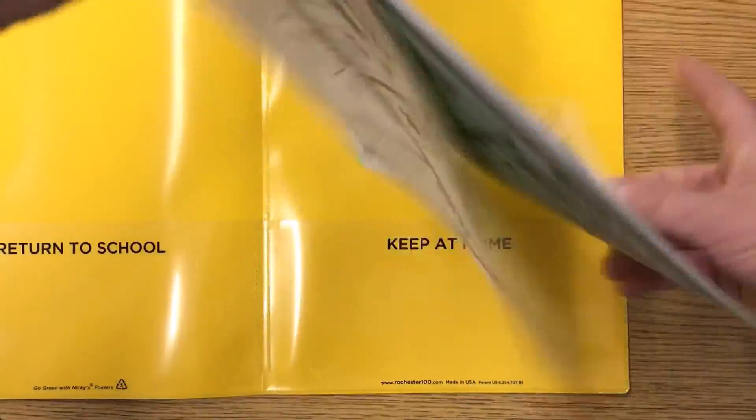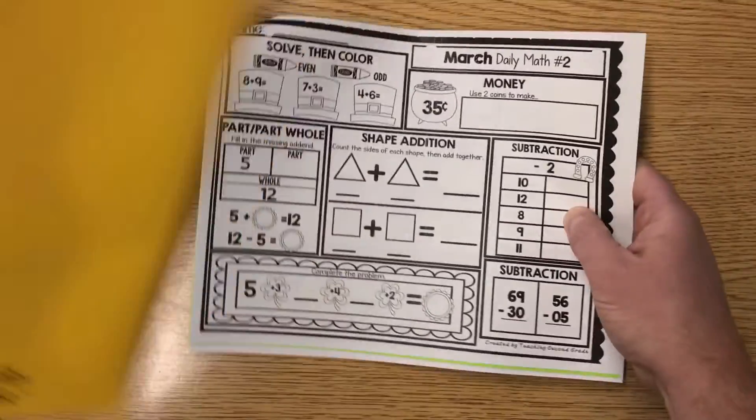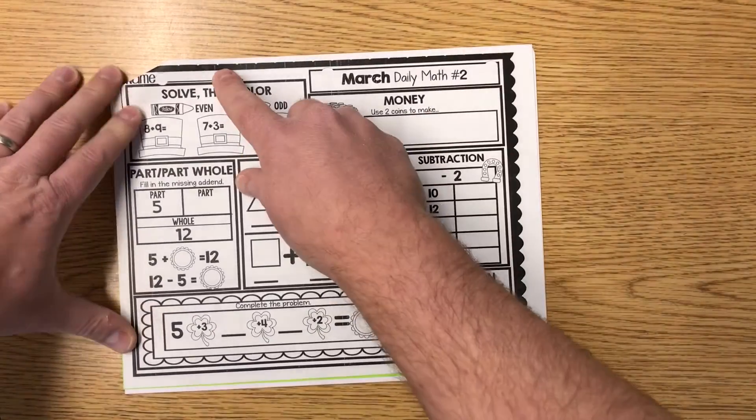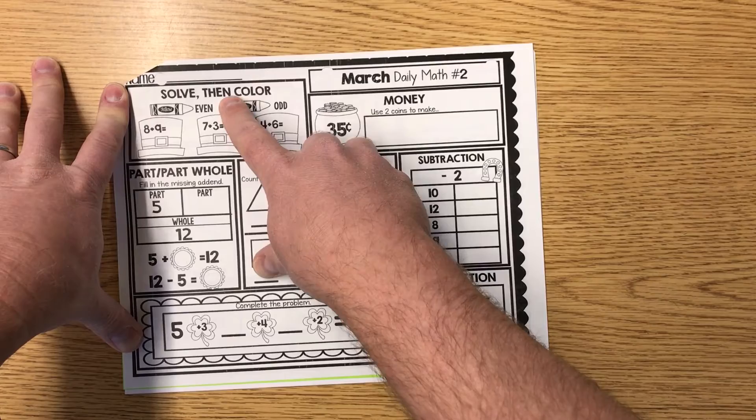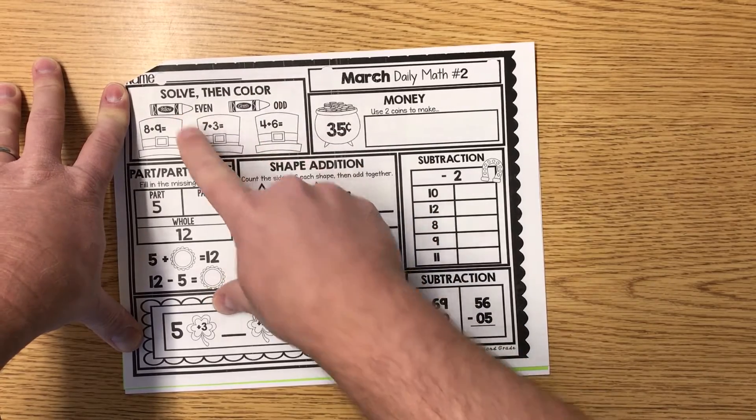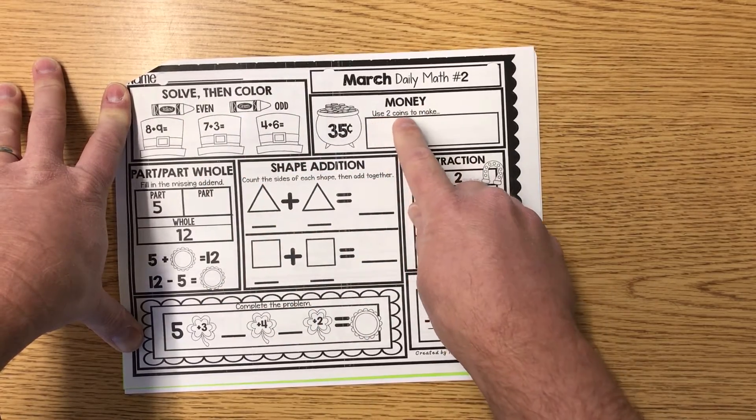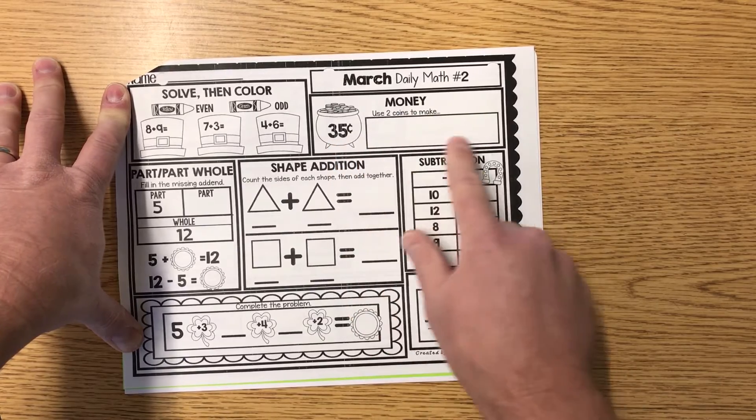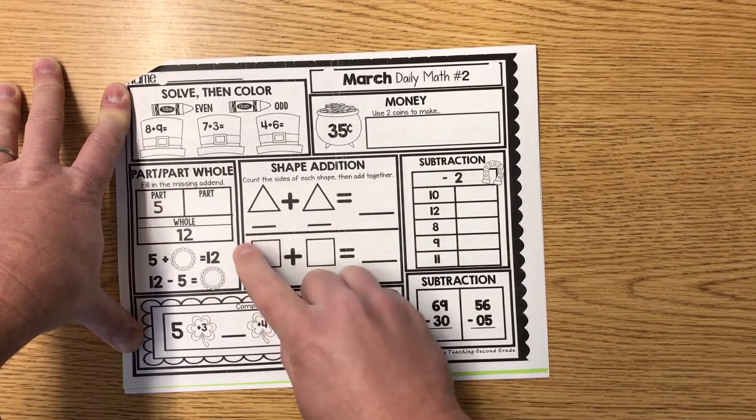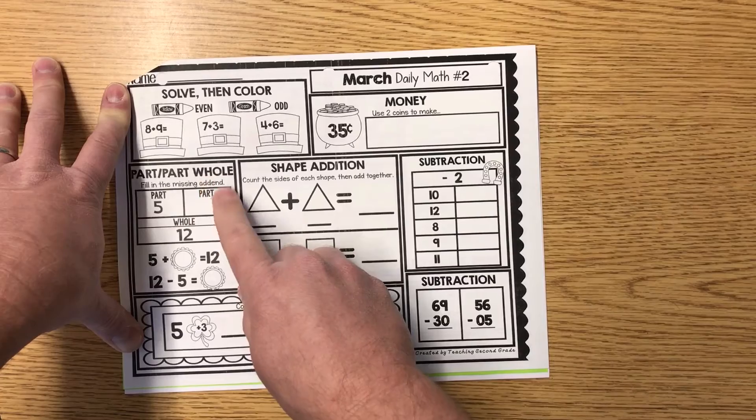March daily math. We're going to again do page two and three. Here we go. Name on the line neatly, please. Solve, then color. Evens are yellow, odds are green. Money. Use two coins to make 35 cents. Part, part, whole. Can you find out the missing addend for here?